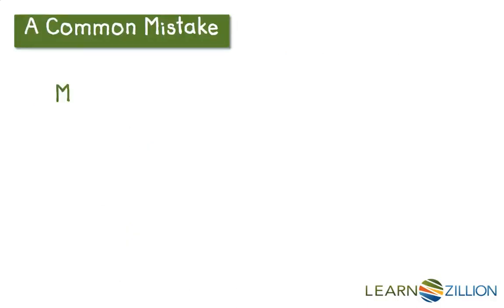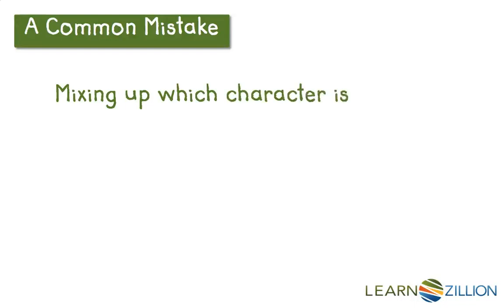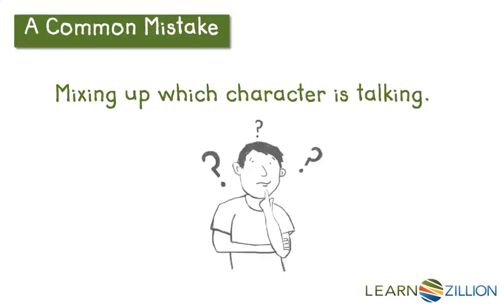A common mistake is mixing up which character is talking. Often in books, when there's more than one character talking to one another in a conversation, authors don't repeat 'he said,' 'she said' over and over and over. Sometimes it can get tricky remembering which character is talking.